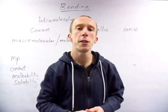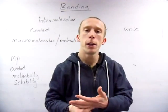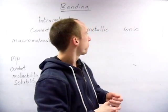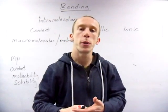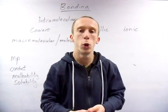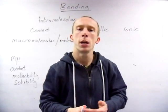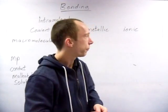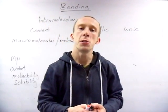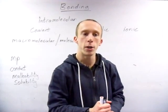Covalent is a sharing of a pair of electrons. Make sure you get that pair in there; if you do not, you drop marks. Metallic is the strong attraction between the nucleus and the sea of delocalised electrons, or the strong attraction between the positive metal ions and sea of delocalised electrons. Ionic is the strong electrostatic attraction between oppositely charged ions.